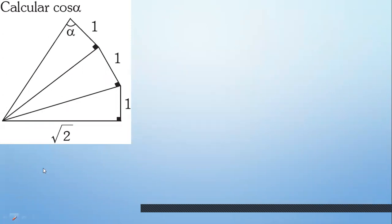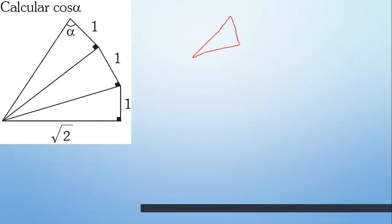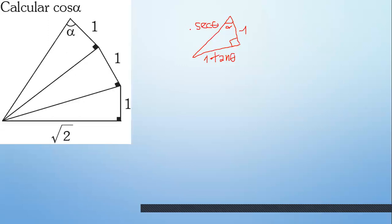Lo que vas a hacer aquí es: tienes 90, tienes 1, tienes alfa. ¿Qué es lo que tienes acá? Opuesto. ¿Y quién estás usando de referencia? El 1. Esto sería 1 opuesto sobre adyacente: tangente. Entonces esto es 1 por tangente de T. Hipotenusa sobre adyacente es secante. Las proporciones se mantienen.